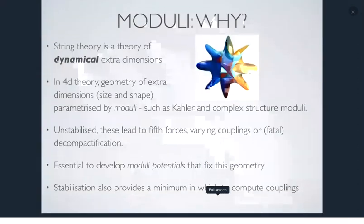String theory is a theory of dynamical geometry where a 10-dimensional theory is reduced to a 4-dimensional one by compactifying, often on a Calabi-Yau space. The geometry of these extra dimensions — described by the Kähler and complex structure moduli parameterizing the size and shape of the Calabi-Yau — corresponds in 4 dimensions to massive gravitationally coupled scalars, the moduli. There are also bundle moduli, brane moduli, and other deformations.